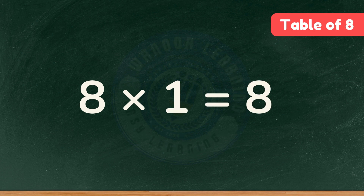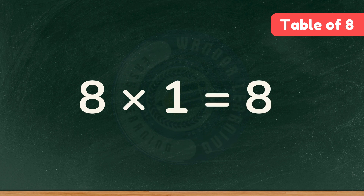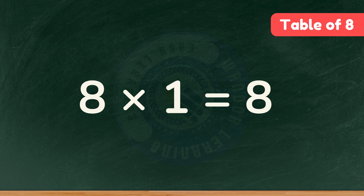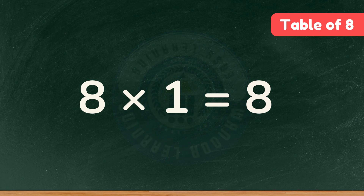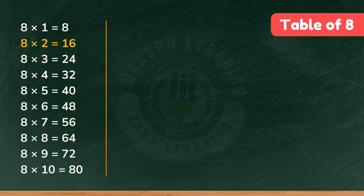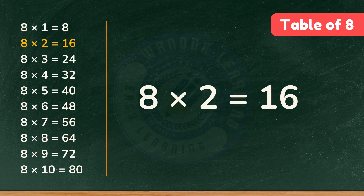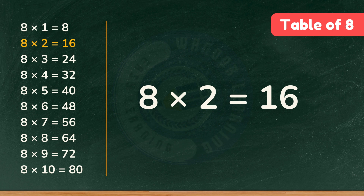The Table of Eight is very easy. Let's start by reciting it together. Repeat after me. Eight times one is eight. Eight times one is eight. Eight times two is sixteen. Eight times two is sixteen.